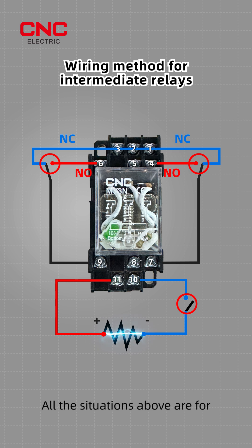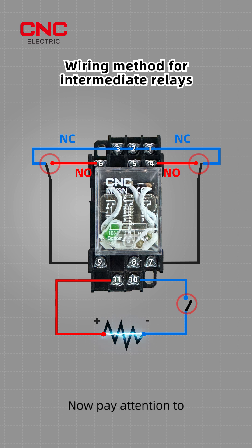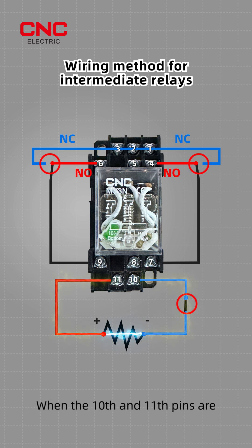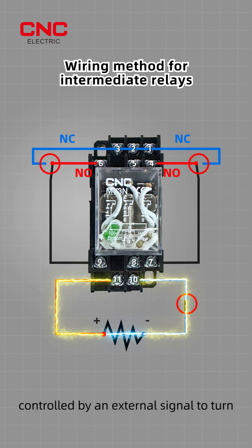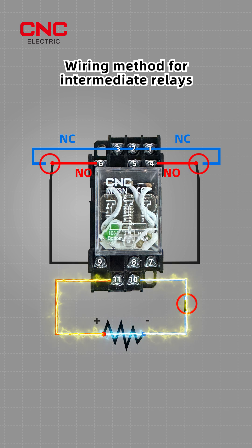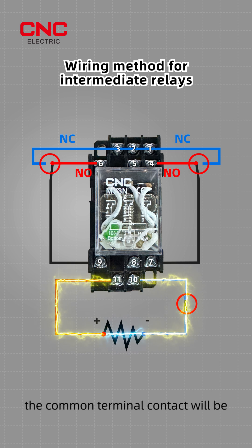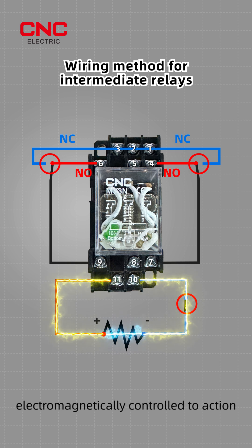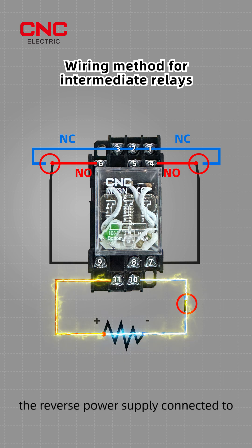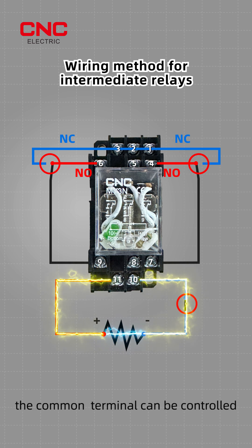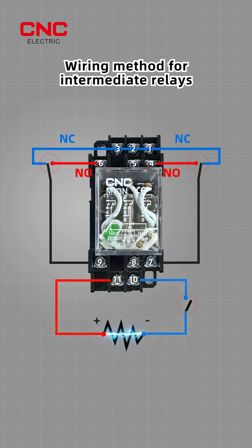All the situations above are for the unpowered state of the relay. Now pay attention to these three positions. When the 10th and 11th pins are controlled by an external signal to turn the coil power on and off, the common terminal contact will be electromagnetically controlled to action. At this point, the reverse power supply connected to the common terminal can be controlled to turn on and off.